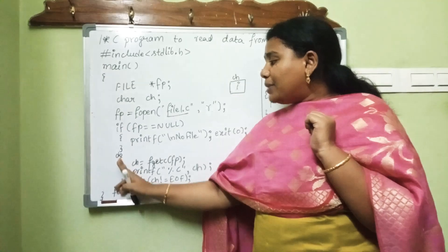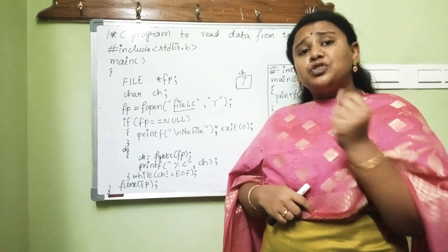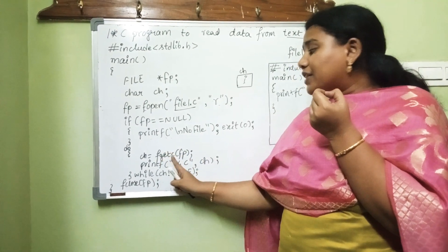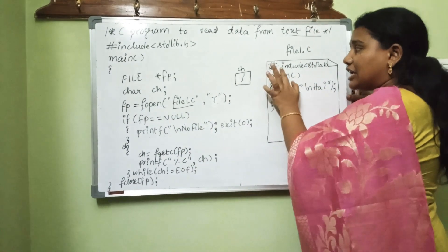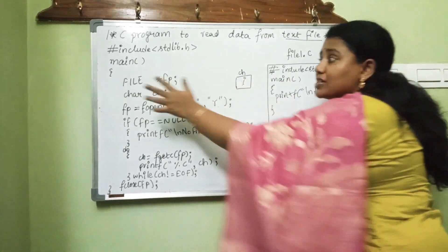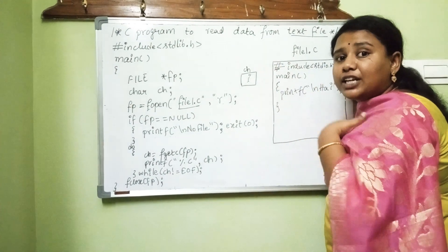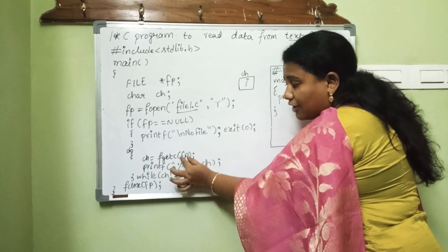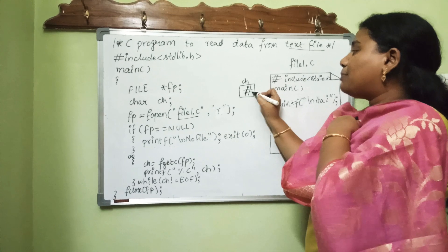Since the file exists, the starting address will be assigned to fp and this loop will be executed. The function used to read each and every character from a file is fgetc. We use fgetc with file pointer fp. fp first points to the hash symbol, then to 'i', then 'n', and so on. We need not increment fp manually — by default it increments itself character by character due to the special properties of the file pointer.